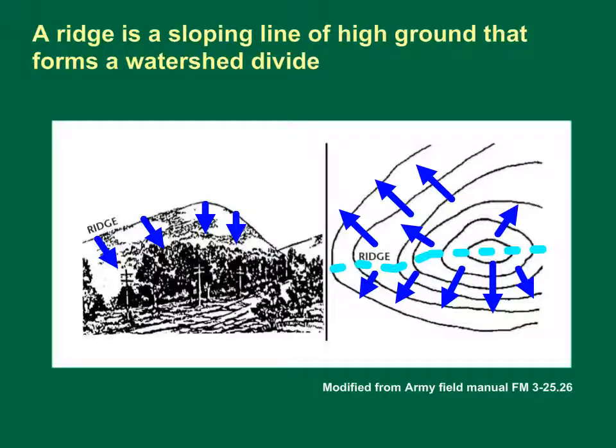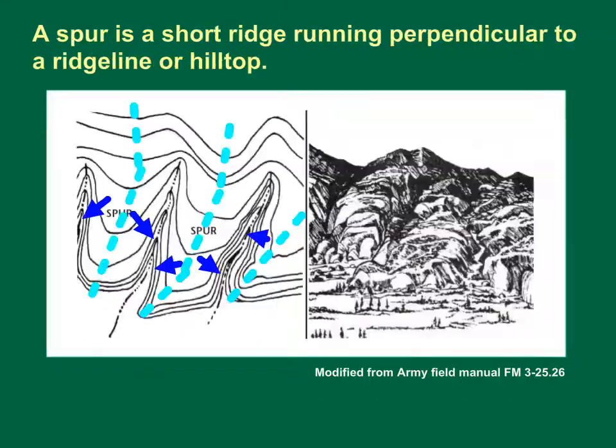If you stand on the center line of a ridge, you will normally have low ground in three directions and high ground in one direction. If you cross a ridge, you will climb to the crest and descend to the base. A map represents a ridge with U- or V-shaped contour lines, but unlike a valley, the closed end of the contour lines points to lower ground. The light blue dashed line represents the watershed divide following the nose of the ridge line.